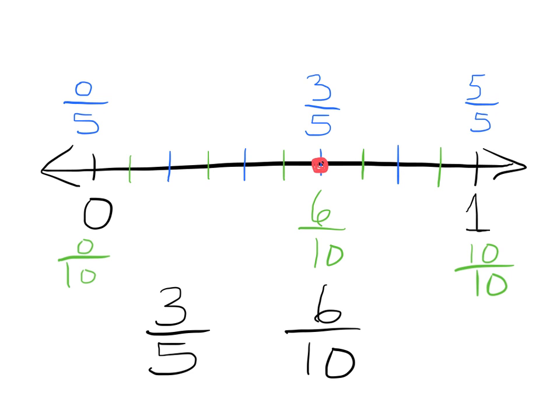All right. So we can see that 3 fifths is equivalent to 6 tenths. And teachers, parents, at this point, what we want students to do is we want them to be able to see that those two fractions are indeed equivalent because they reside in the same place on the number line. We also want students to be able to see the relationship that 3 times 2 is 6, 5 times 2 is 10, that when we multiply the numerator and the denominator by the same thing, we get another fraction that is equivalent. And this is where we're getting to. But at this point, we're just doing it from a real number sense point of view where students are using their number line.